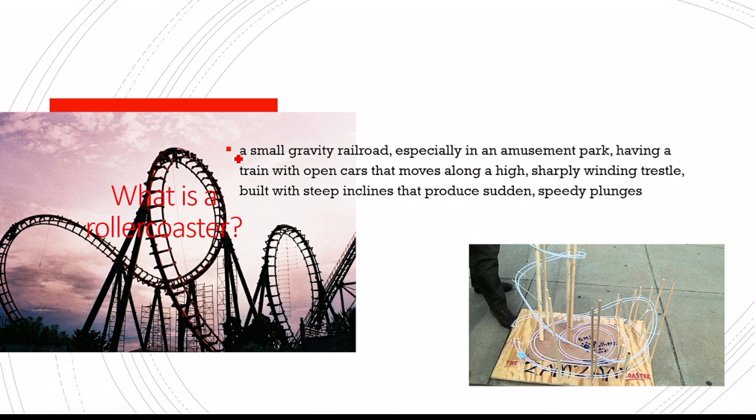So what is a roller coaster? A roller coaster is a small gravity railroad, especially in an amusement park, having a train with open cars that moves along a high, sharply winding trestle, built with steep inclines that produces sudden speedy plunges.